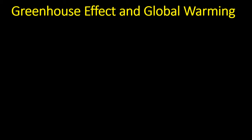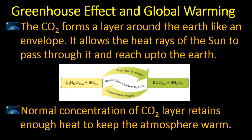The basic gas is carbon dioxide. Carbon dioxide forms a layer around the earth, just like an envelope. It allows the heat rays of the sun to pass through it and reach up to the earth. The normal concentration of the carbon dioxide layer retains enough heat to keep the atmosphere warm.